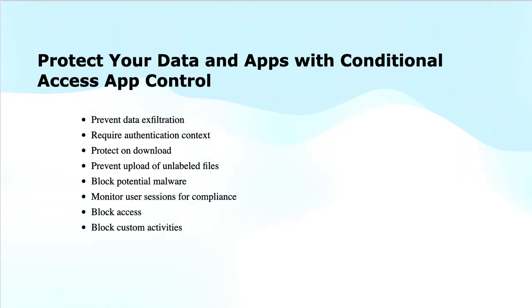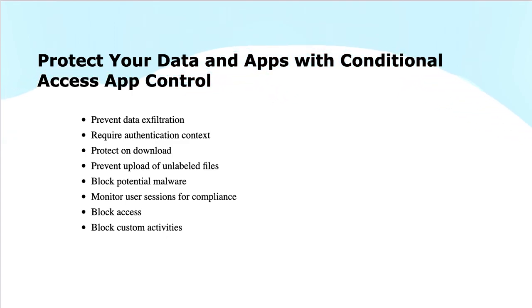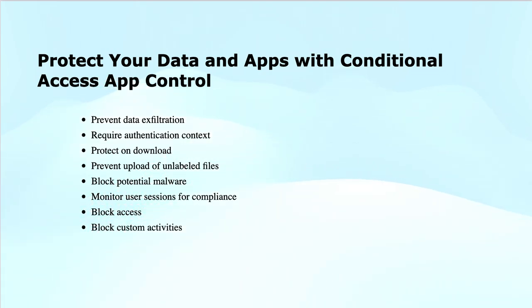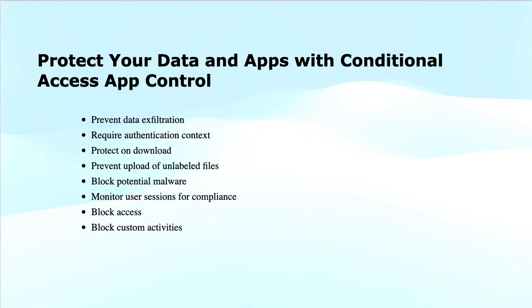Block potential malware protects your environment by blocking the upload of potentially malicious files. Monitor user sessions for compliance can identify risky users, monitor them when they sign into applications, and log their actions from within the session. Block access granularly blocks access for specific applications and users depending on the risk factor. Block custom activities handles unique scenarios that carry risk — for example, sending messages with sensitive content in Microsoft Teams.